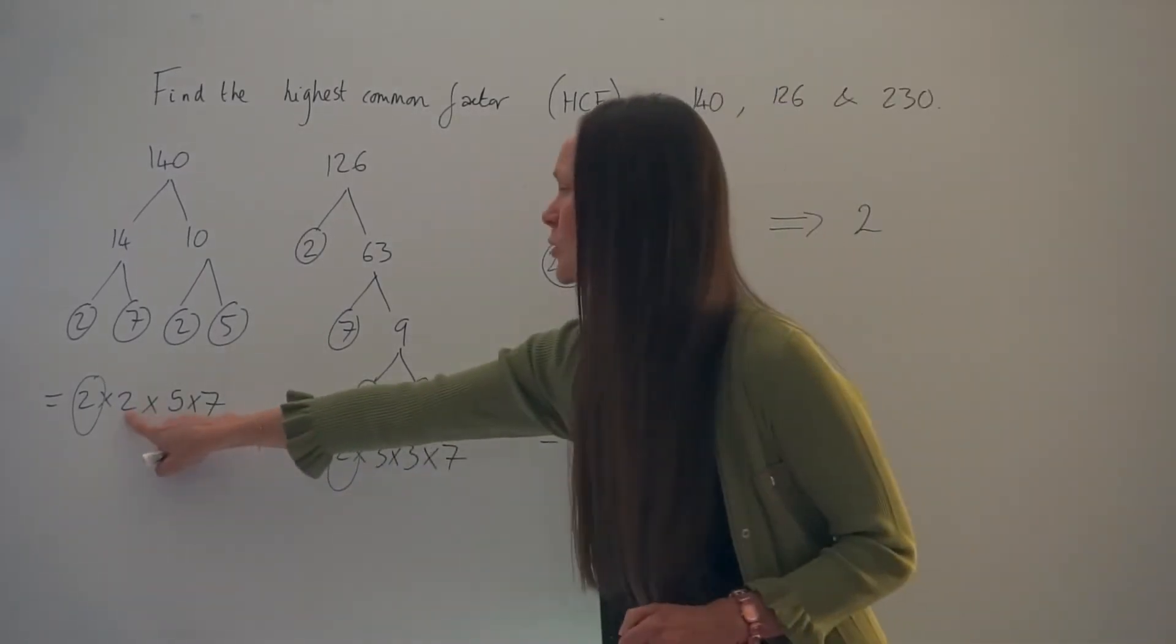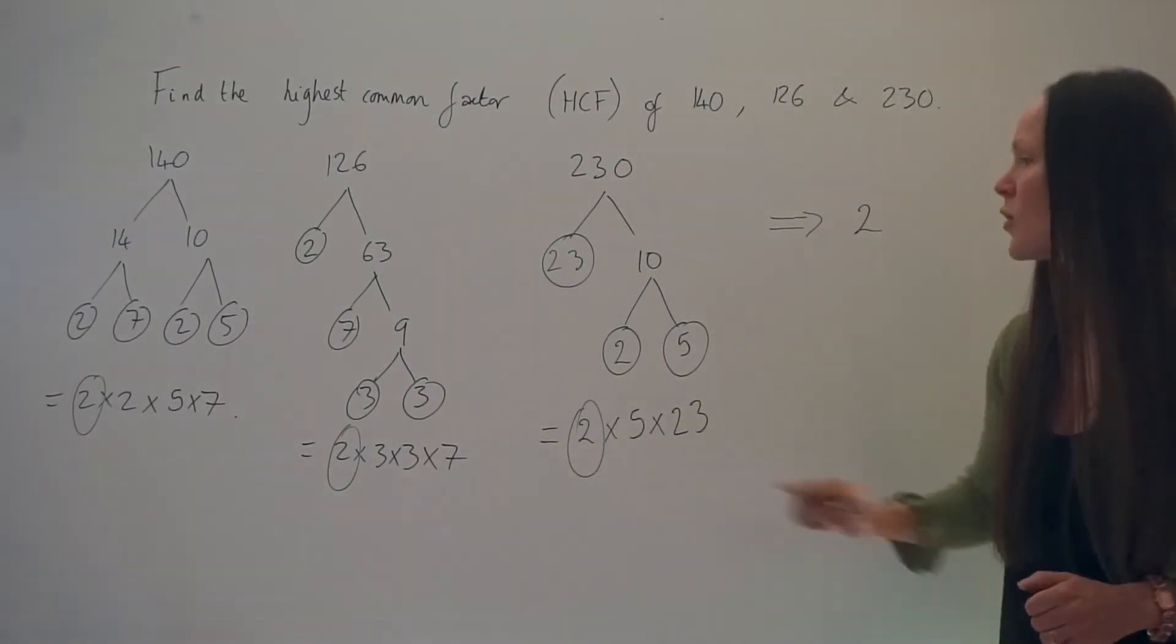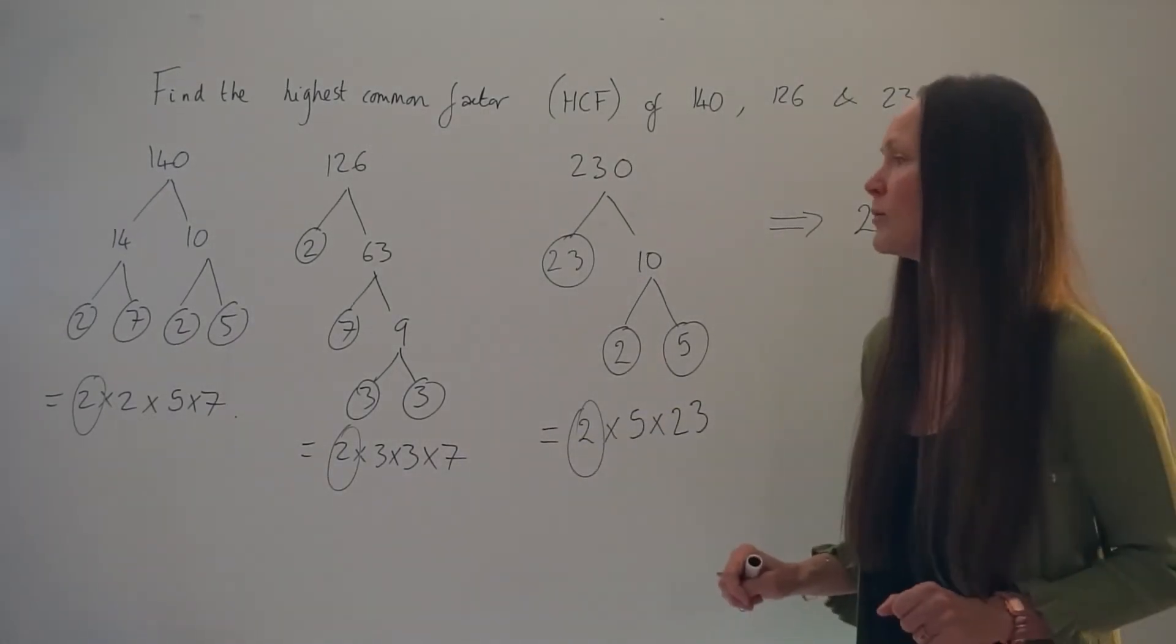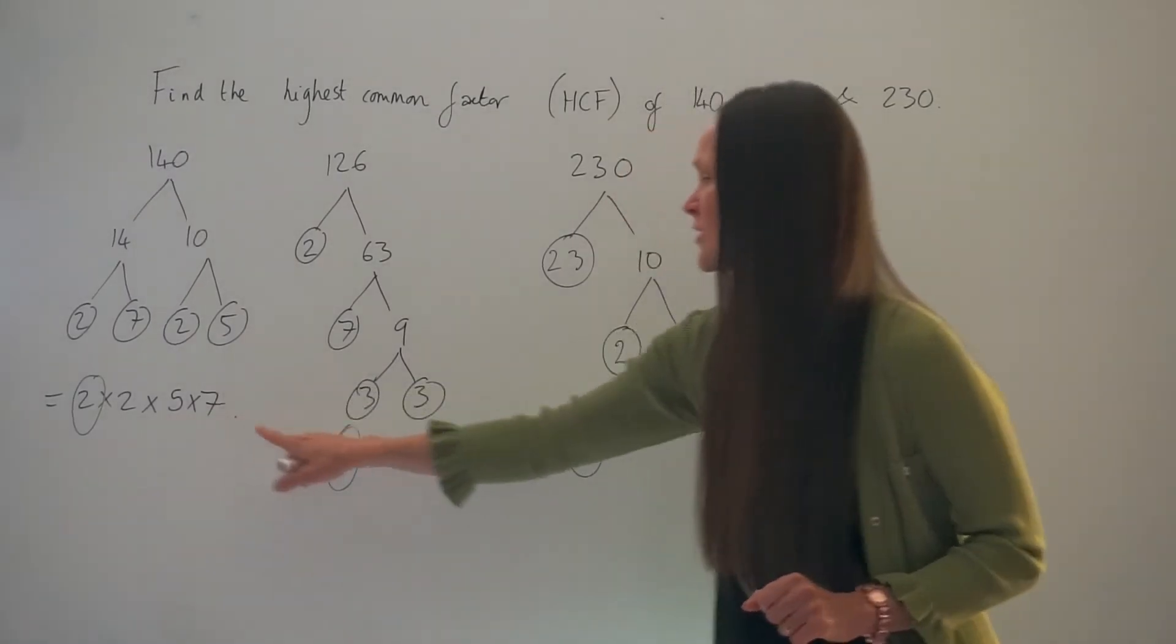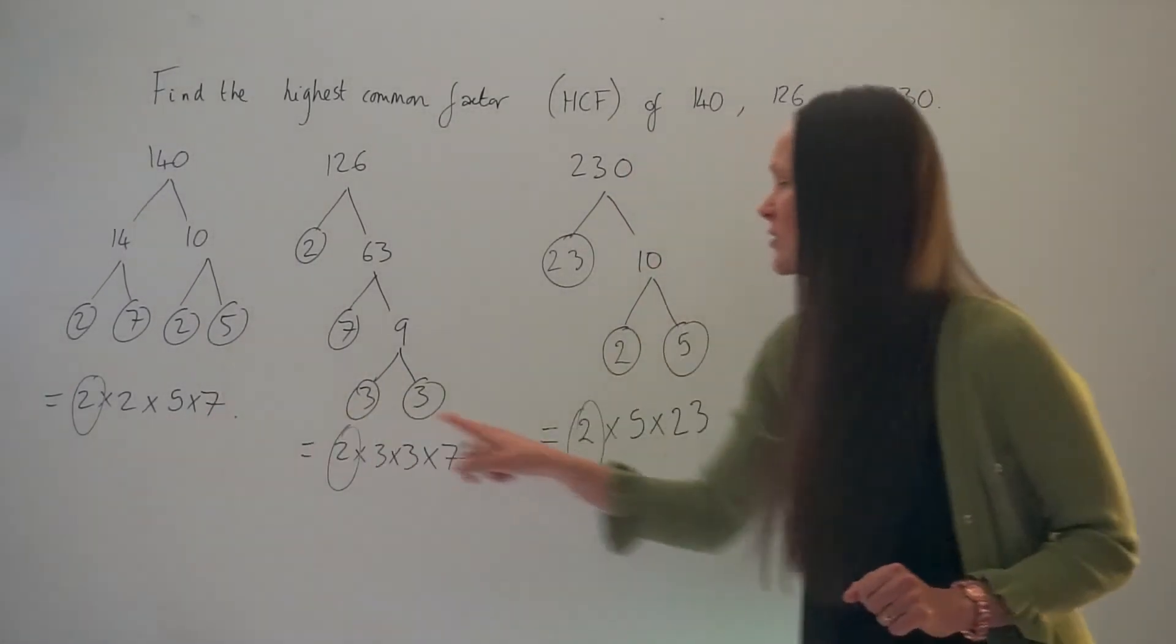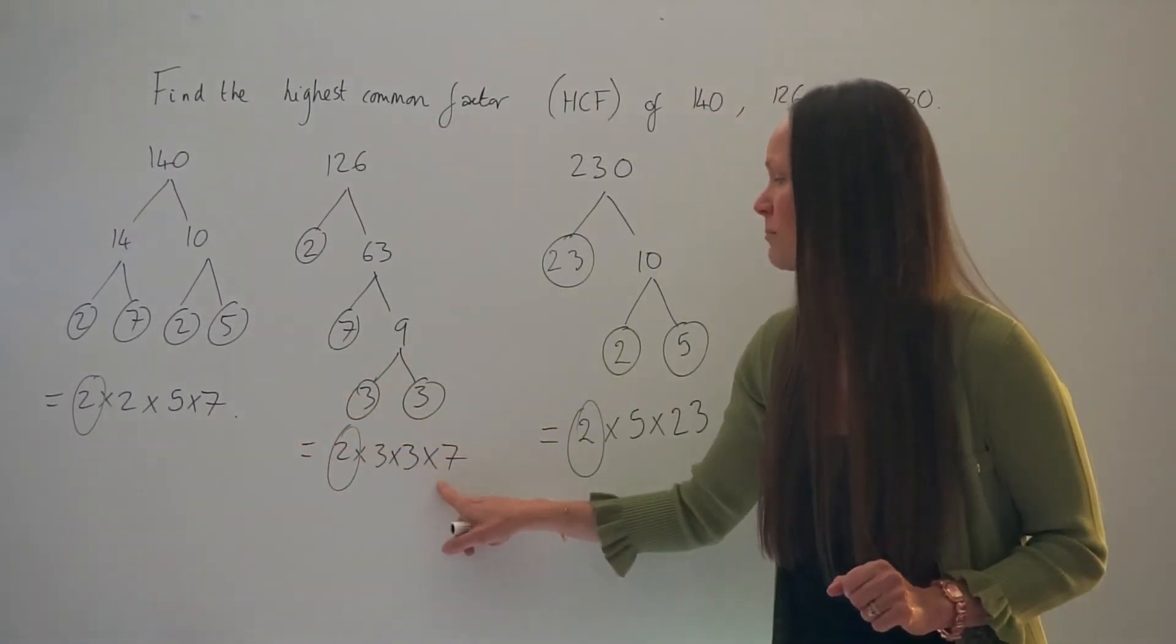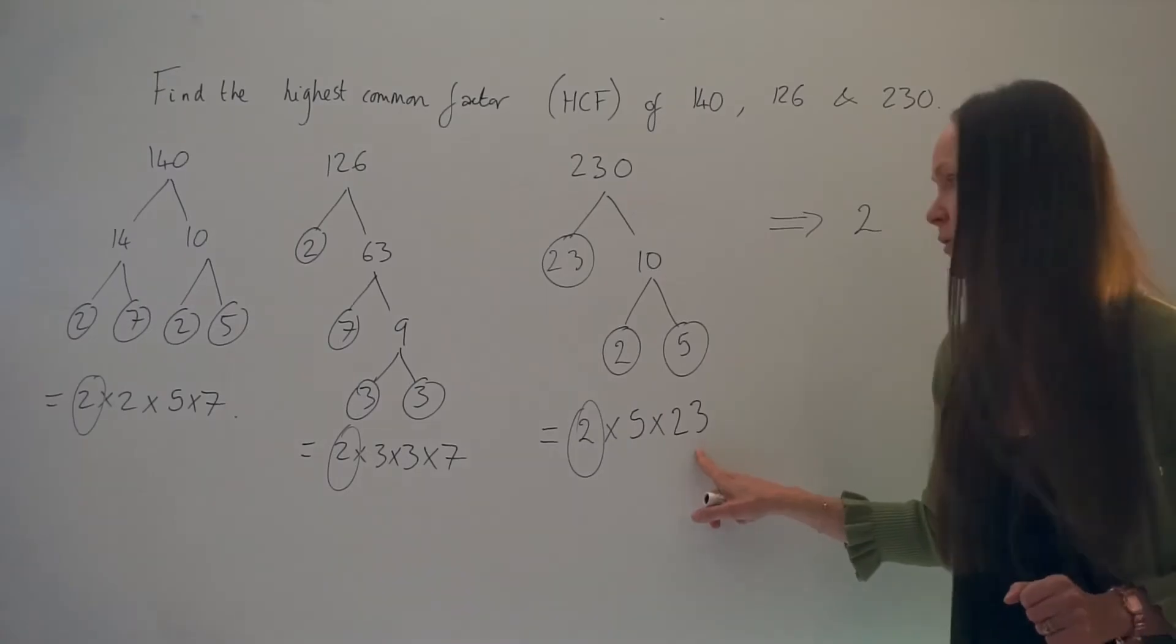If I look at this number 2, it wasn't common with 126 and it's not common here, so it's definitely not a common prime factor. 5 doesn't occur in each of these either; it only occurs in these two. 7 occurs in the first two numbers but not in the final number.